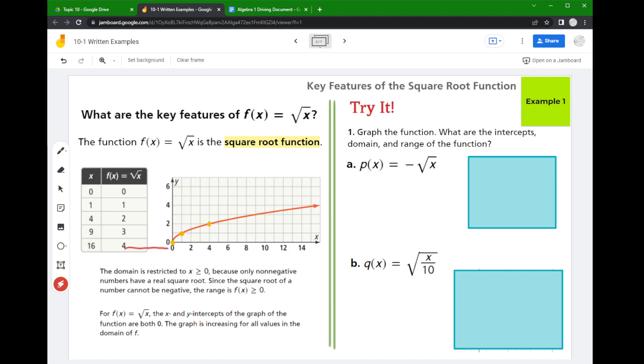So notice this is only on the positive side of the x axis. And so because you can't take the square root of a negative number, it keeps it there to that positive side. We call that a restricted domain.